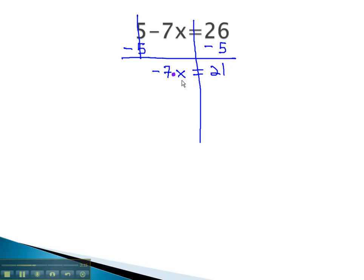So to get the x alone, we must do the opposite of multiplying, which is dividing out the negative 7. Doing the same thing to the other side, and notice our negative 7's divide out. We're left with x equals 21 divided by negative 7 is negative 3.